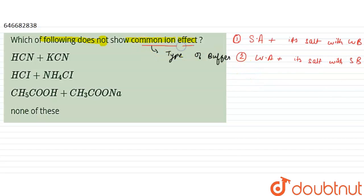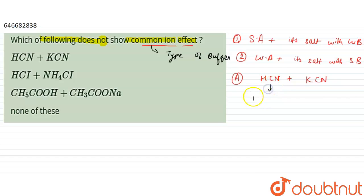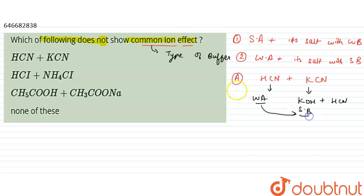In Option A, we have HCN plus KCN. HCN is a weak acid, and KCN is formed from KOH plus HCN. Since KOH is a strong base and HCN is a weak acid, this follows the second condition. So Option A will show the common ion effect.